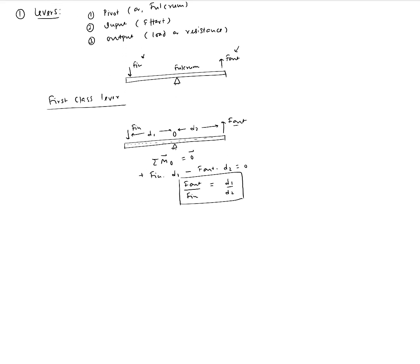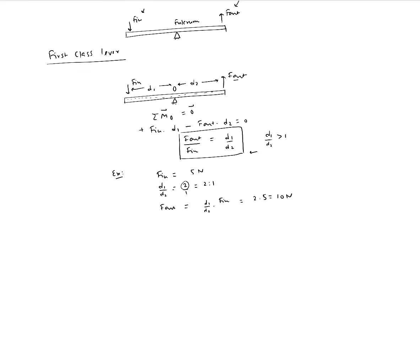From this we can see how the output force increases relative to the input. If d1 over d2 is greater than one, we have force magnification at the output. For example, if the input force is 5 newtons and d1 over d2 is 2 to 1, then the output force equals 2 times 5, which is 10 newtons - so with a 2-to-1 distance ratio, you can lift a load twice the input force.